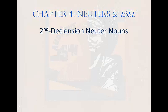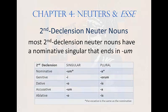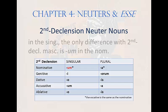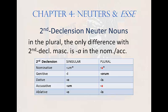Second declension neuter nouns. Here are the endings for second declension neuter. Note the nominative singular ending: um. In the second declension singular, that's the only difference between masculine and neuter forms. In the plural, there are only two differences: the a ending found in the nominative and accusative of the neuter. Happily, there is little to memorize here, assuming you have already memorized second declension masculine endings.